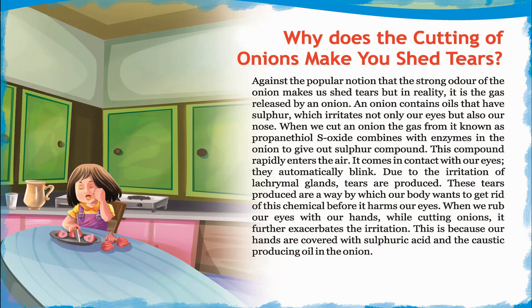These tears are a way by which our body wants to get rid of this chemical before it harms our eyes. When we rub our eyes with our hands while cutting onions, it further exacerbates the irritation, because our hands are covered with the sulfur-containing caustic oils from the onion.